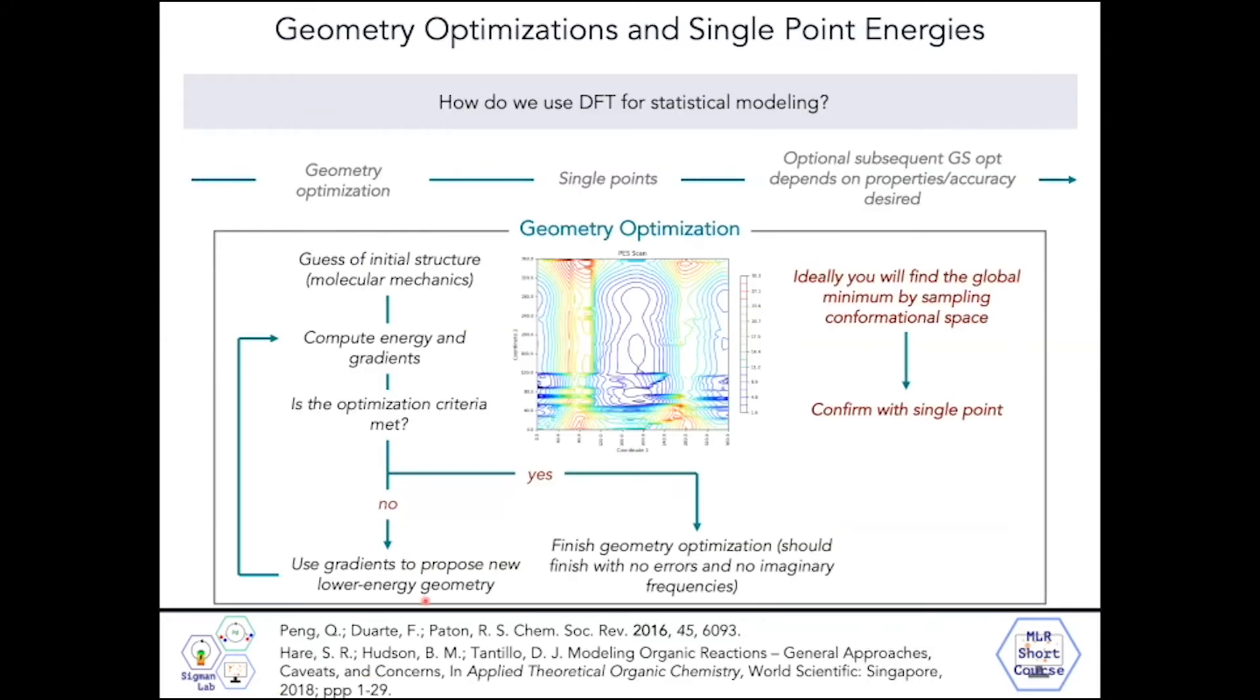How do we use DFT for statistical modeling? We begin with a geometry optimization, generally using the functional B3LYP, followed by a single point at a higher level of theory, generally MO6-2X, and then an optional subsequent geometry optimization, which depends on the properties and the accuracy desired for the particular system. You have your guess of your initial structure from molecular mechanics, and here you would submit a subset or all of the conformers from your conformational search.